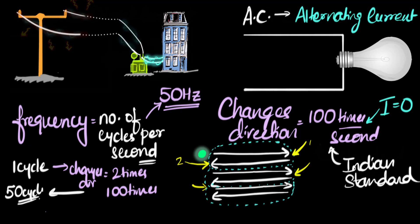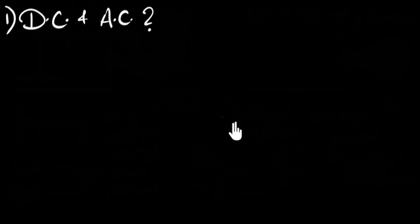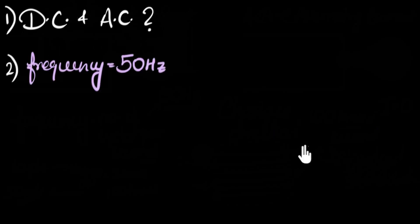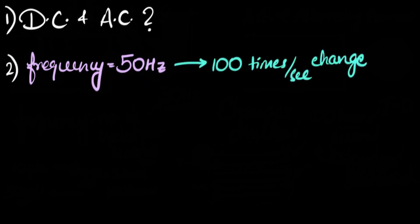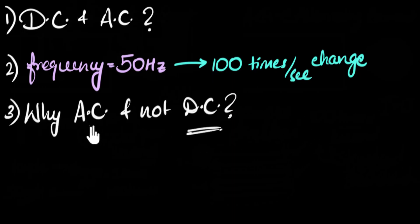Let's summarize and recall what we learned. Can you recall what AC and DC stand for and what's the difference between them? What is the meaning of the word frequency? What does it mean to say frequency is 50 Hertz? Can you explain why, if frequency is 50 Hertz, the current is changing its direction 100 times per second? Finally, can you explain why we go for AC when it comes to power transmission to all our houses and not DC? If you have difficulties answering these questions, feel free to go back and re-watch that part of the video.